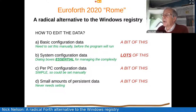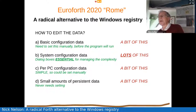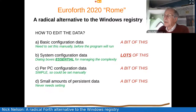So what are we going to do? How do we actually edit this data? The basic configuration data obviously has to be set manually before the program will run — otherwise you can't find out where the database is. The system configuration data on the Windows system was partly done by dialog boxes, but some of it you actually had to dive into the Windows registry editor to set. Dialog boxes are essential for managing this complexity properly. The per-PC configuration data was simple and could be set manually. And the persistent data never really needed setting at all, because it was set by actual usage.